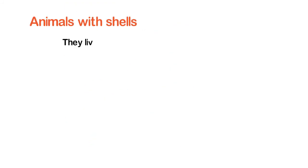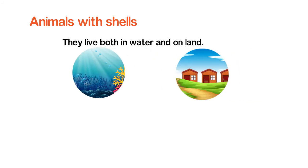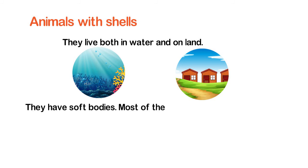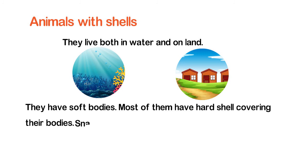Animals with shells live both in water and on land. They have soft bodies, and most of them have a hard shell covering their bodies. Snails and oysters are examples.